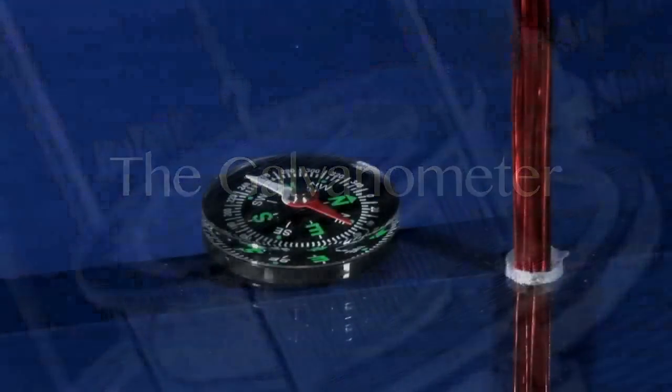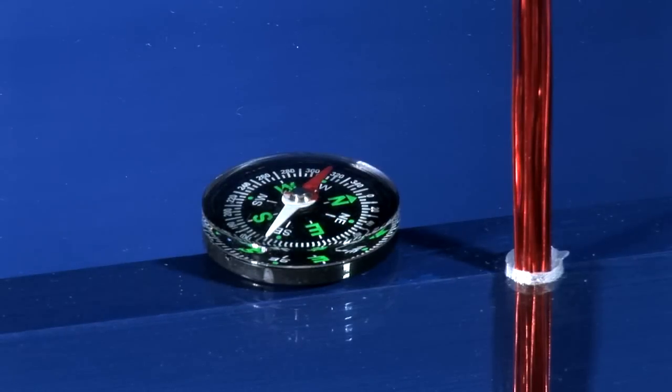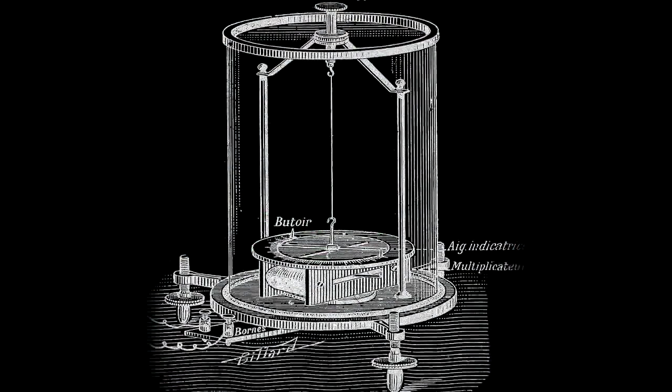The first idea developed by early pioneers was to use the strength of the magnetic field generated in a coil to deflect a compass.